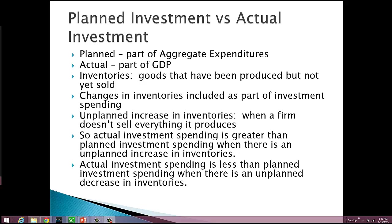We want to think about the difference between planned investment and actual investment. Planned investment is part of aggregate expenditures, and actual investment is part of GDP. If we can figure out what the difference is, we can figure out why and when aggregate expenditures will not be equal to GDP.